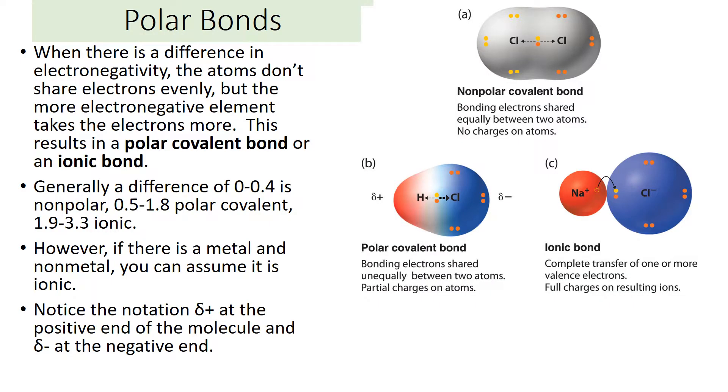So what that means is in a bond, if the two elements have the same electronegativity, what you end up with is a nonpolar covalent bond. Neither one of them attracts electrons more than the other, so they're evenly split.